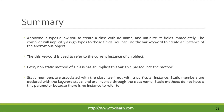The this keyword is used to refer to the current instance of an object. Every non-static method of a class has an implicit this variable passed into the method. Static members are associated with the class itself, not with a particular instance. Static members are declared with the keyword static and are invoked through the class name. Static methods do not have a this parameter because there is no instance to refer to.